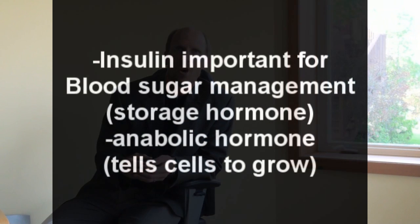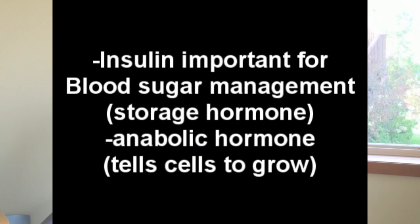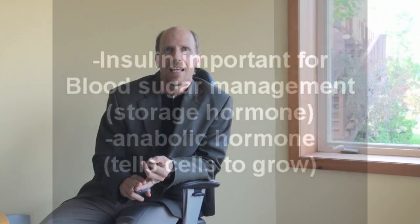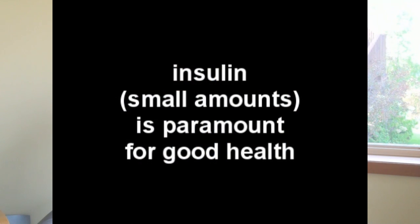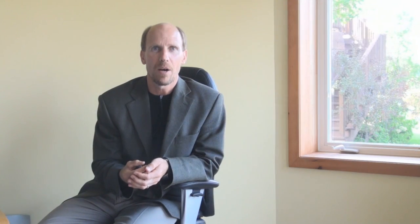To explain that, I have to remind you that insulin has two primary functions in the body. One function, as you're aware of, is that insulin is really important for blood sugar management — it's a storage hormone. And two, a function that many people have forgotten: insulin is an anabolic hormone. That means it tells certain cells to grow and divide, and in different cells it has a different effect. In smaller amounts, insulin is absolutely paramount for good health — it's our friend.